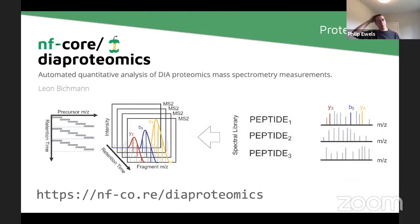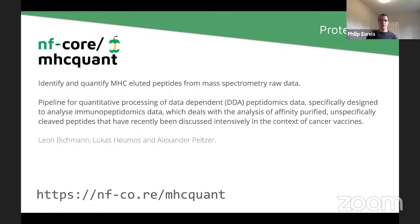Next up we have a pipeline called 'diaproteomics' by Leon Bichmann, another major contributor for proteomics, which deals with mass spec measurements. This one is in a similar development state but pretty well used and stable. One of the older ones is 'mhcquant', specifically for identifying peptides from mass spec data — I believe it's slated for its first stable release this week, which is really exciting, and I saw some chat about setting up AWS benchmark datasets for this pipeline.